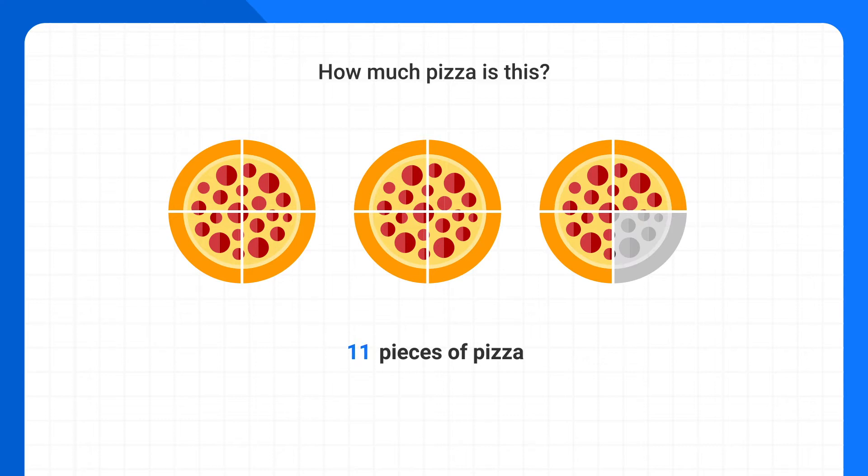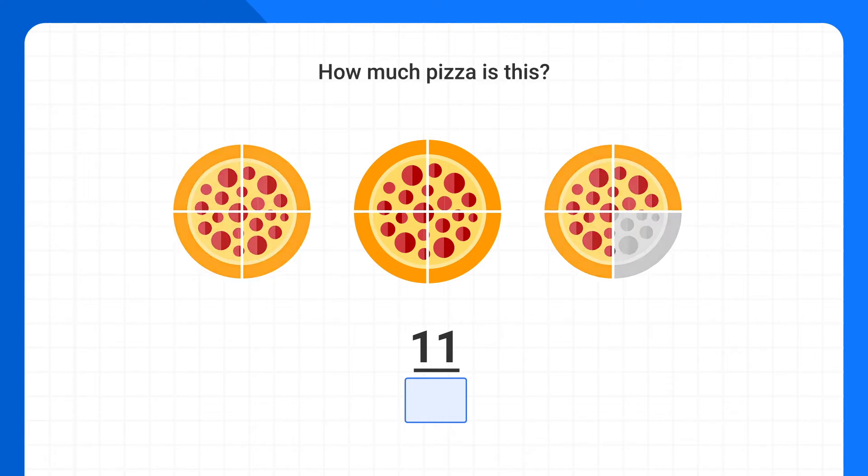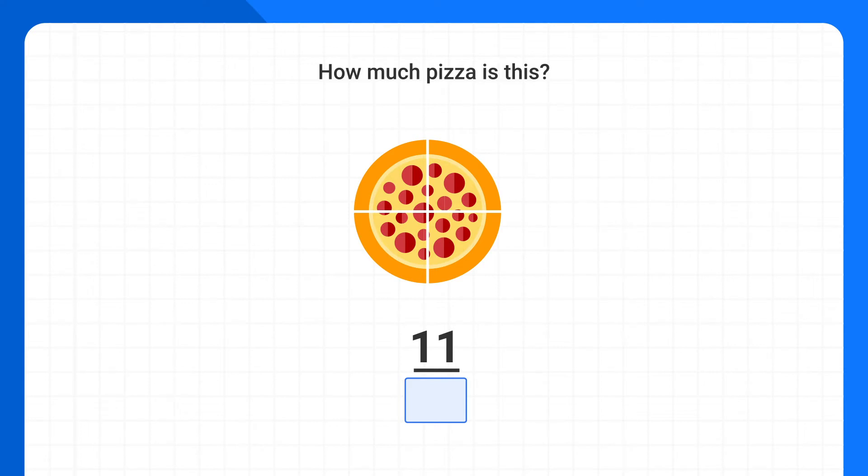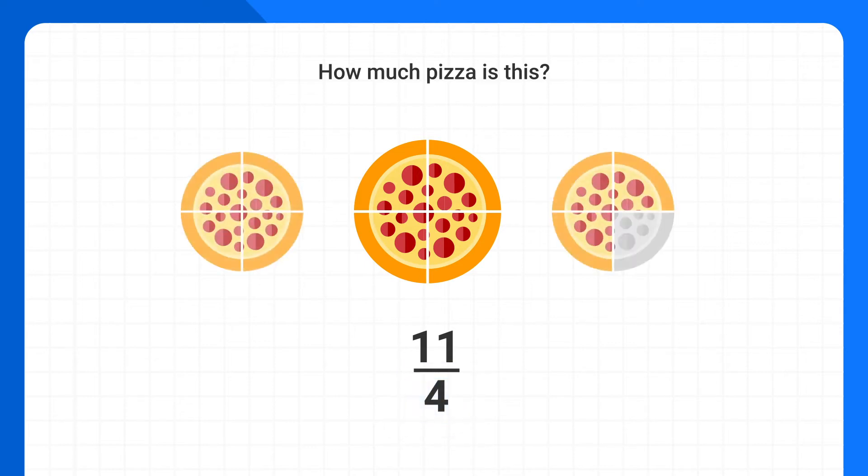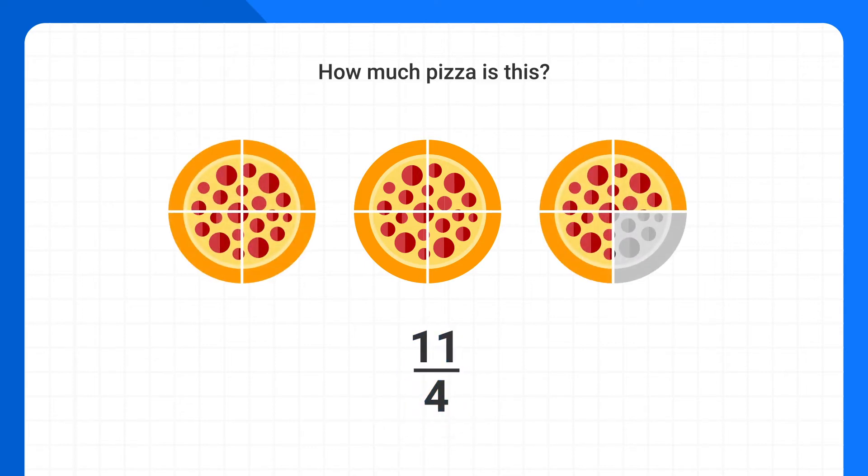Like with any fraction we write, the number of pieces we have becomes the numerator, so 11 will be the numerator of our fraction. What about the denominator, though? Well, the denominator is always the number of parts in one whole. If we look at just one whole pizza, we can see that it's made of 1, 2, 3, 4 parts, or pieces. Each of these pieces is 1 fourth of a pizza, so our denominator is 4.